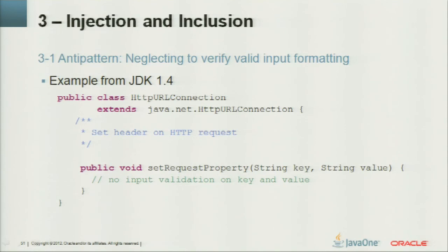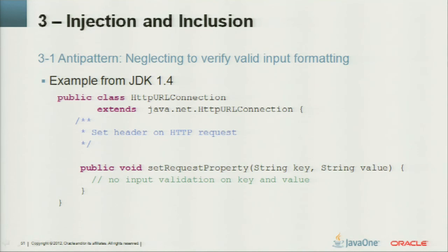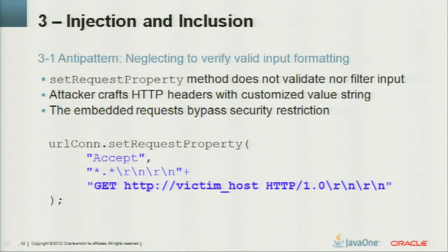An example of neglecting to verify valid input formatting: in JDK 1.4, the HttpURLConnection had a function setRequestProperty(). A common misconception was that this function did input validation — but it did not (it does now, but it didn't then). An attacker could craft HTTP headers with custom value strings to bypass security restrictions by writing embedded HTTP requests.